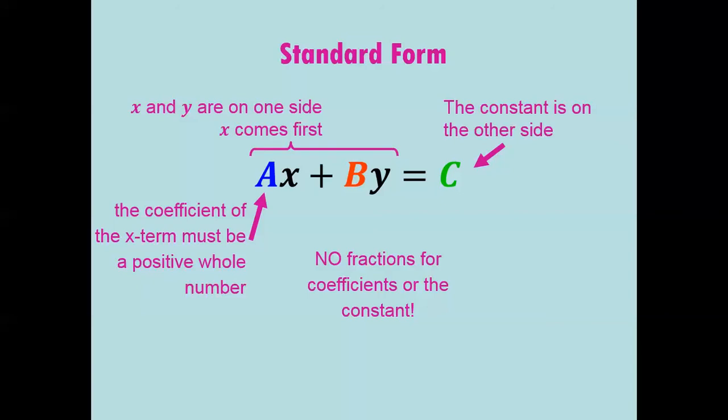a has to be a positive whole number, b has to be a positive or negative whole number, otherwise known as an integer. And the same with c. c has to be an integer.